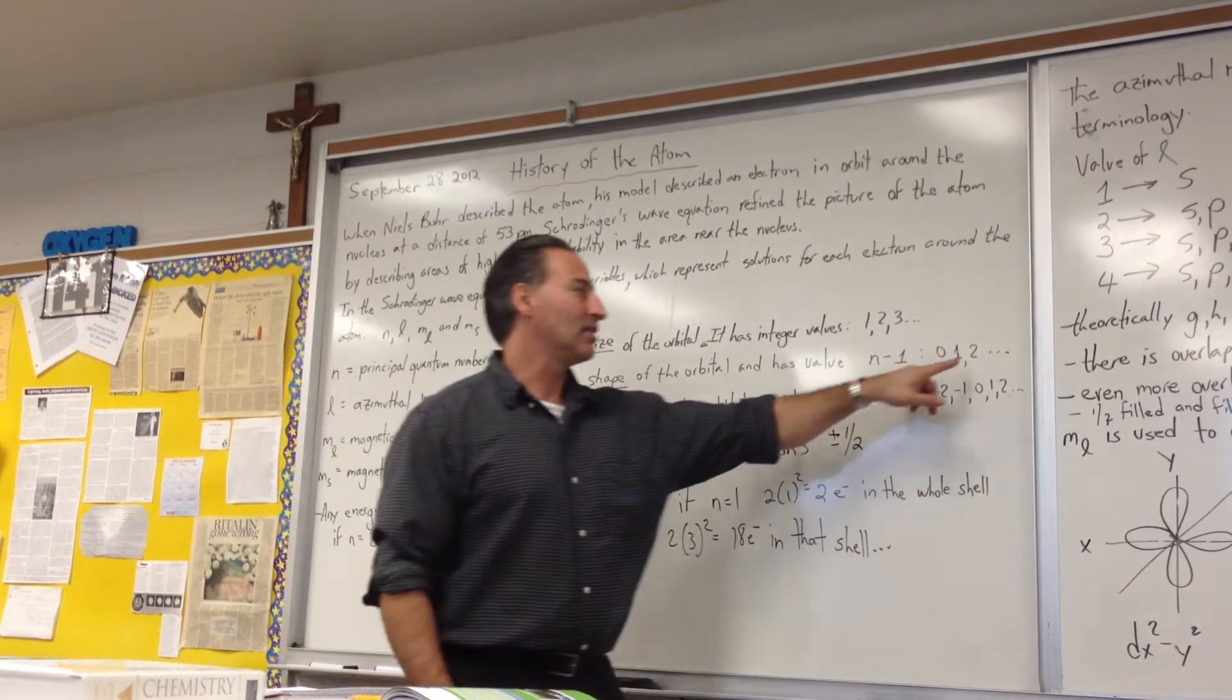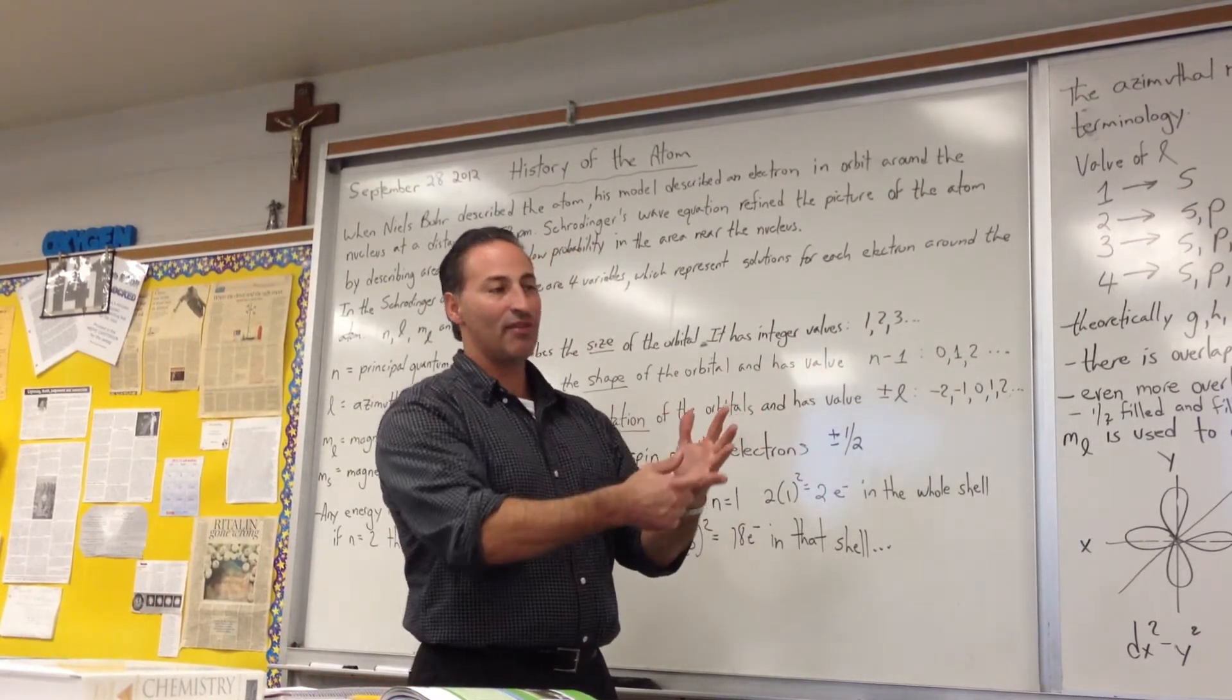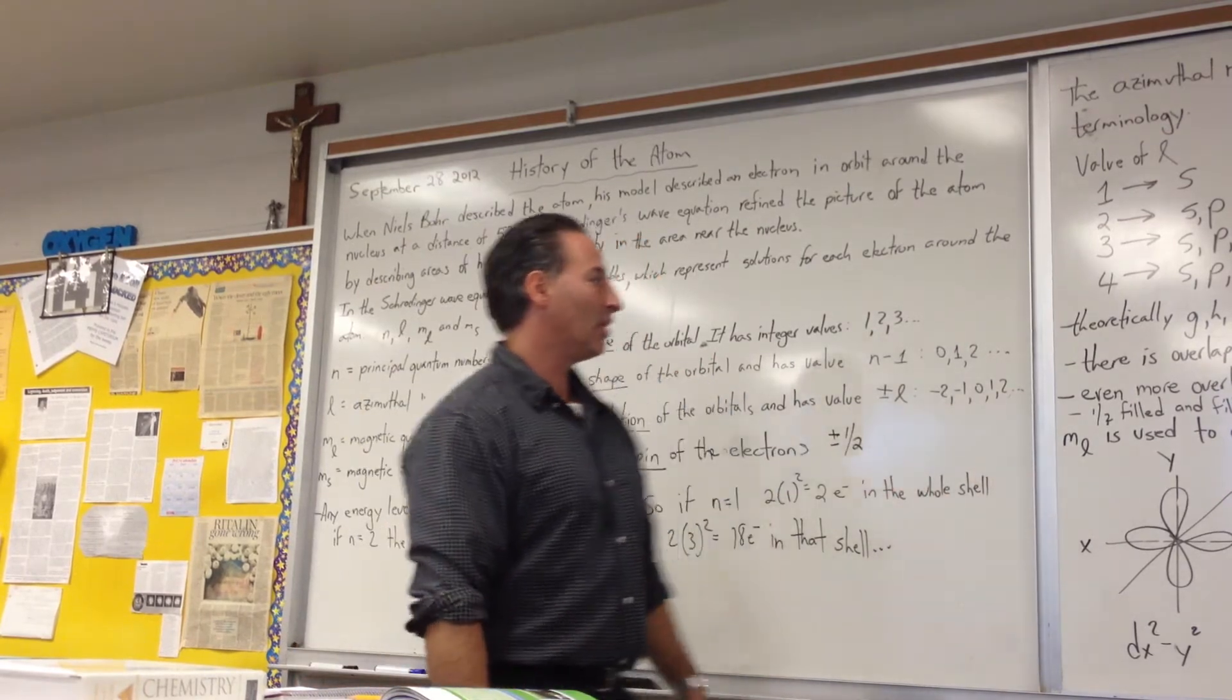And in fact, when L is equal to 2, M sub L gives you those five possibilities. That's why we have five D orbitals, which I draw later on.